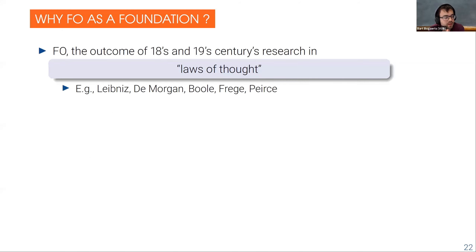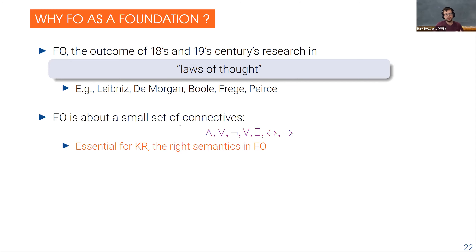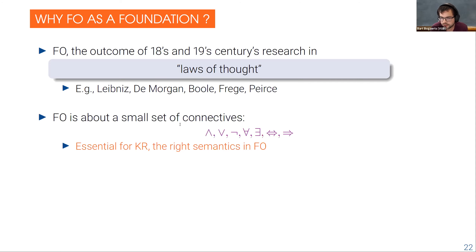On the other hand, first order logic came out of the 'laws of thought' project in the 18th and 19th century. It has a very limited set of connectives, all with very well understood semantics. If I tell you the definition of 'and' — when a structure satisfies Phi and Psi — in natural language that would just be: it satisfies Phi and it satisfies Psi. These connectives have clear informal semantics. You have to be careful with implication, which is sometimes confusing, but it's a simple, small set of connectives that is still quite powerful.